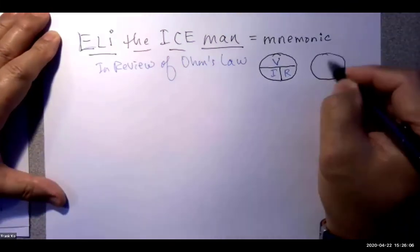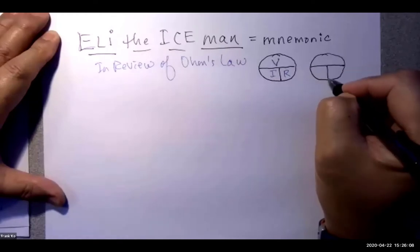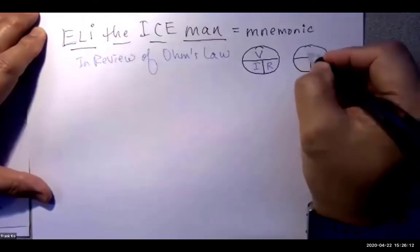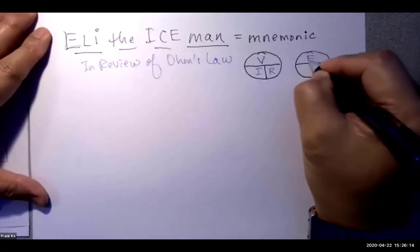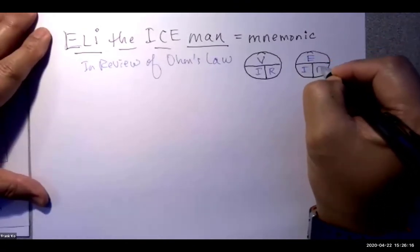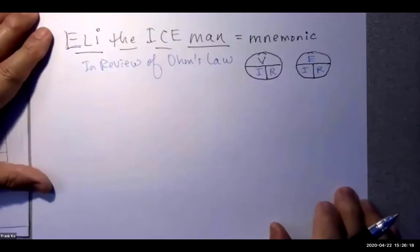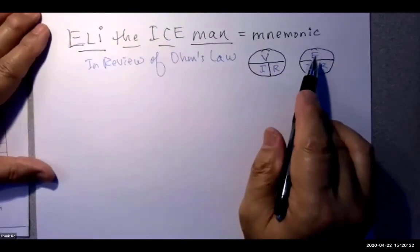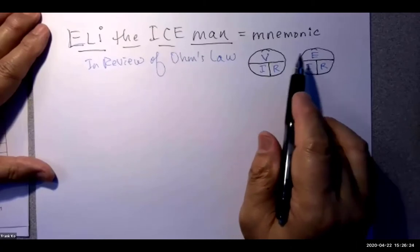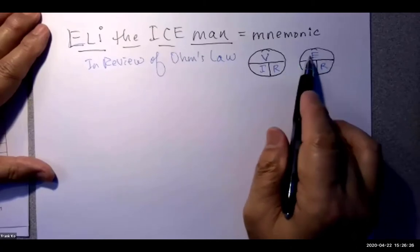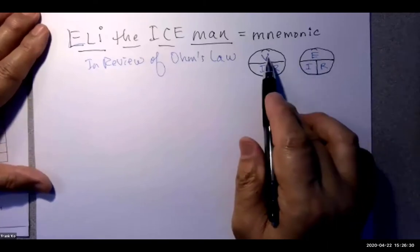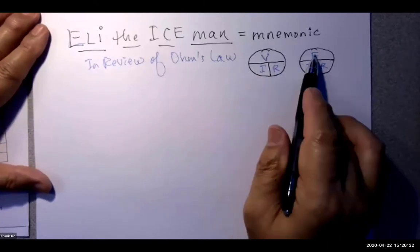You may also remember in our textbook, the big Del Mar textbook, it shows a different lettering. It shows an E, I, and an R. E stands for electromotive force, which is one of the definitions of voltage. So E and V are interchangeable. Anytime you see an E used in a formula, it represents voltage.